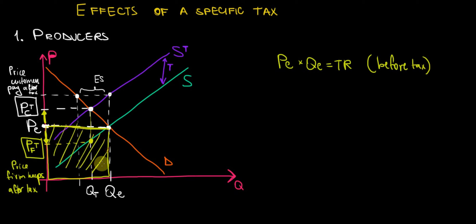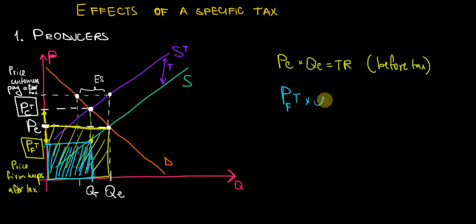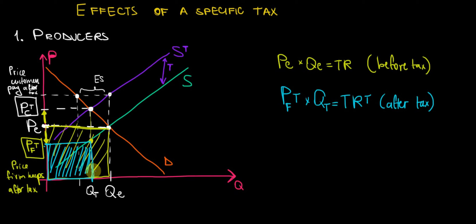What is the revenue that the firm keeps after the tax? It is going to be the price they actually get to keep — PFT — times the quantity they actually get to sell — QT. This blue rectangle is the revenue of the firm after the tax, and as we can see graphically it is a smaller rectangle than the yellow one. Therefore, PFT times QT is the total revenue after the tax, and as a result the producers are hurt because they get to keep less revenue after the tax than before it.